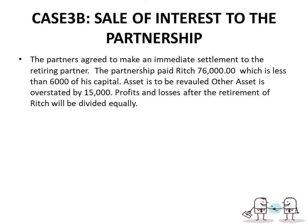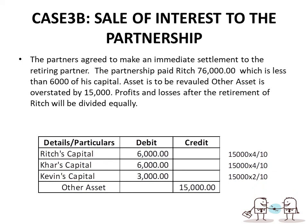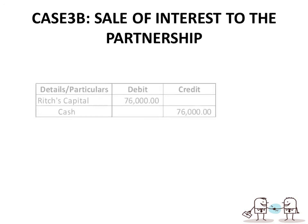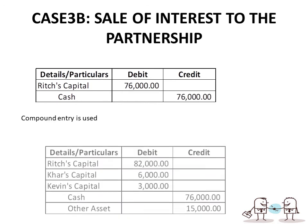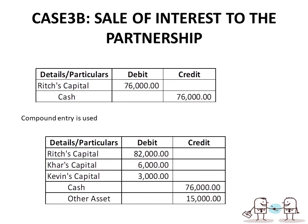If the partnership agreed to pay Rich $76,000 and assets are to be revalued — other assets are overstated by $15,000 — first record the revaluation: debit Rich's Capital $6,000, debit Carr's Capital $6,000, debit Kevin's Capital $3,000, credit Other Assets $15,000 (using P&L ratio 4:4:2). Then record the settlement: debit Rich's Capital $76,000, credit Cash $76,000. As a compound entry: debit Rich's Capital $82,000, debit Carr's Capital $6,000, debit Kevin's Capital $3,000, credit Cash $76,000, credit Other Assets $15,000.